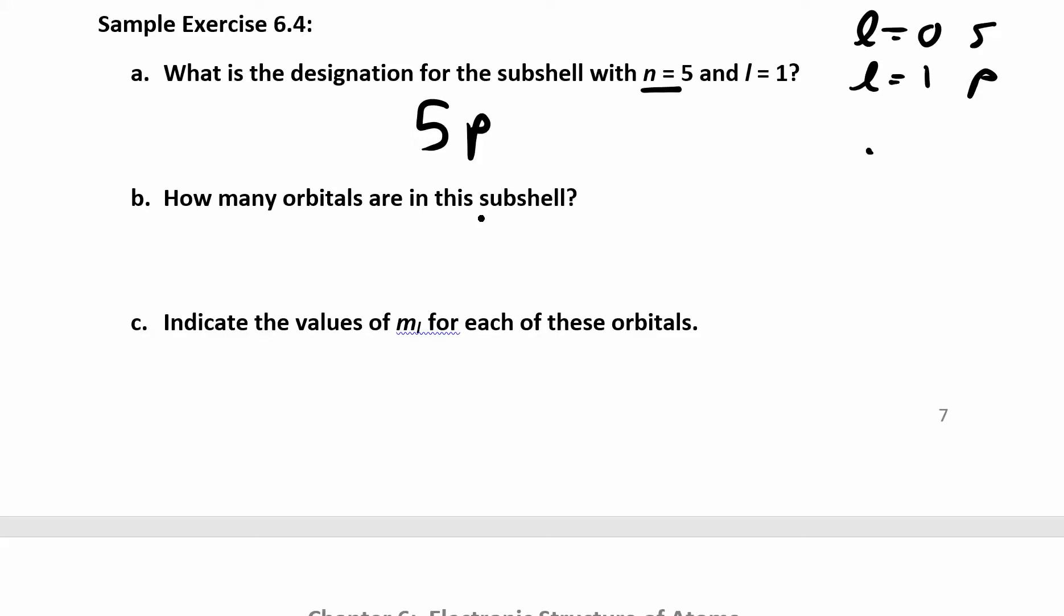And how many orbitals are in this subshell? Well, what do we know about it? That's really asking what are the ml? How many ml's do I have here? And then in part c, indicate the ml values for each one of these.